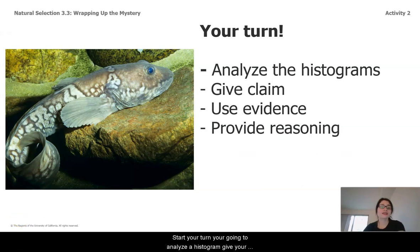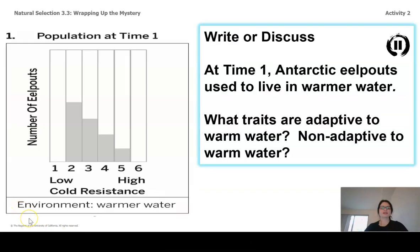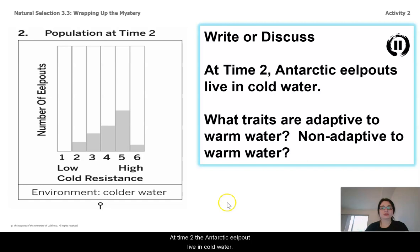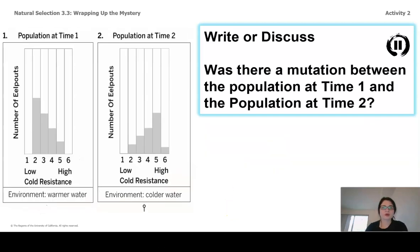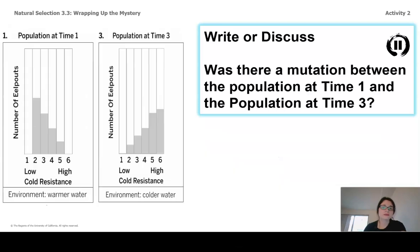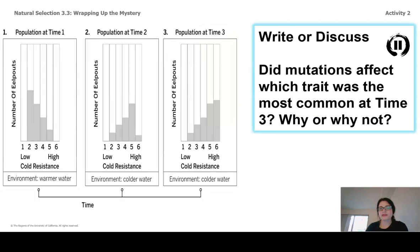Now it's your turn. You're going to analyze the histograms and give your claim, evidence, and reasoning. At time one, the Antarctic eel pout used to live in warmer water — what traits are adaptive and non-adaptive for warmer water? At time two, they live in cold water — what traits are adaptive and non-adaptive, and was there a mutation between time one and time two? At time three, they've been living in cold water for many generations — what traits are adaptive or non-adaptive, was there a mutation between time one and time three, and did mutations affect which trait was most common at time three? Why or why not?